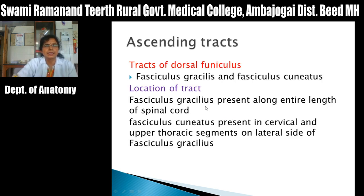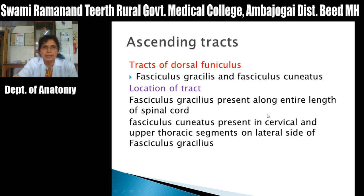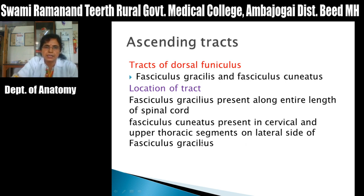First we will see the ascending tracts in the dorsal funiculus: fasciculus gracilis and fasciculus cuneatus. Location: fasciculus gracilis is present along the entire length of the spinal cord. Fasciculus cuneatus is present in cervical and upper thoracic segments on the lateral side of fasciculus gracilis. That means it is absent in the lower thoracic, lumbar, and sacral segments.